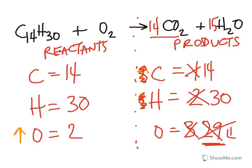I have 43 oxygens. How do you get 14? 14 times 2 is 28 plus 15 times 1. So 15. So 28 plus 15. 28 plus 15 is 43. So now, what can I multiply 2 by that will give me 43?